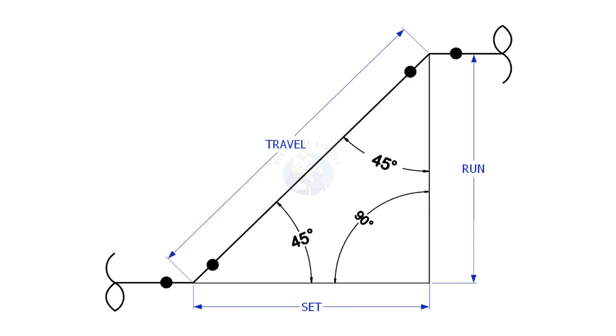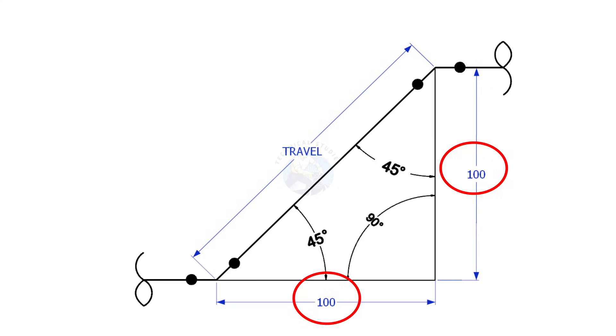Let's start by examining the 45 degree offset. If the including angle is 45 degrees, then the set and the run shall be equal. In this offset, suppose the set is 100, then the run also shall be 100.